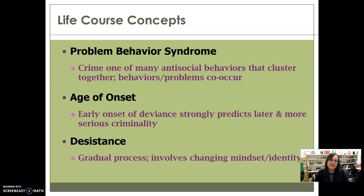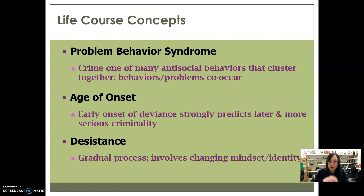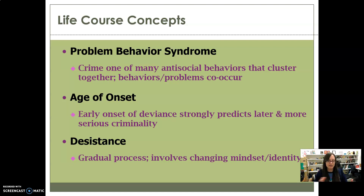Desistance is when people stop committing crimes, and it's a slow process. It involves changing the mindset and identity of the offender so that they no longer consider themselves an offender — they shift from being a current offender to an ex-offender. Change has to come from within to be effective and permanent. The offender has to decide they are not a bad person; they have just done bad things in the past and don't need to do those things anymore. It starts with a general readiness to change — like thinking, 'Being in and out of prison is not a fun lifestyle. I need to change my life.'